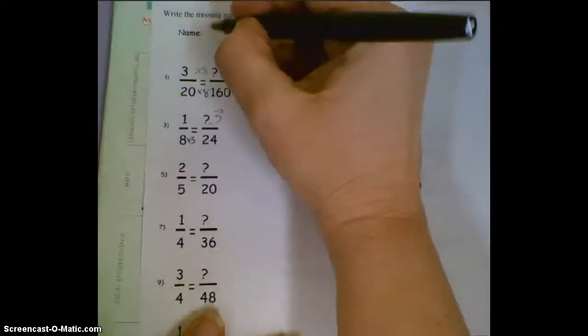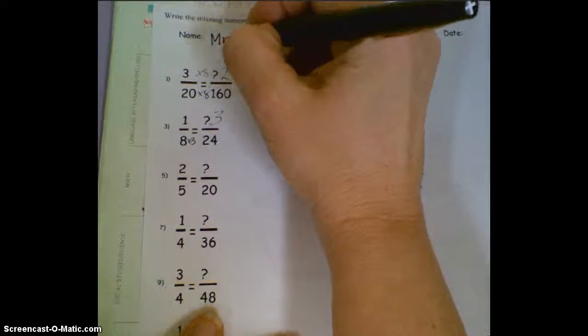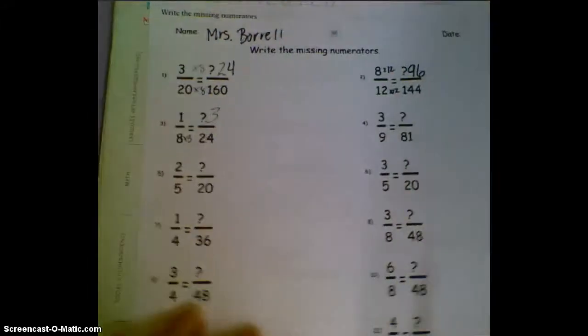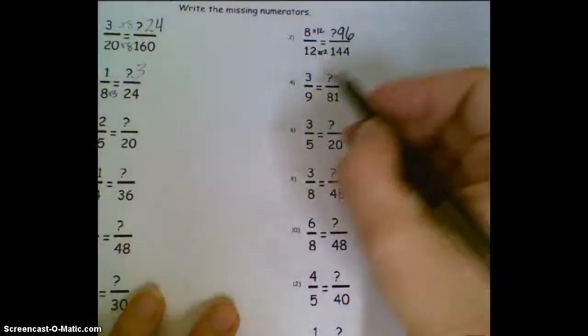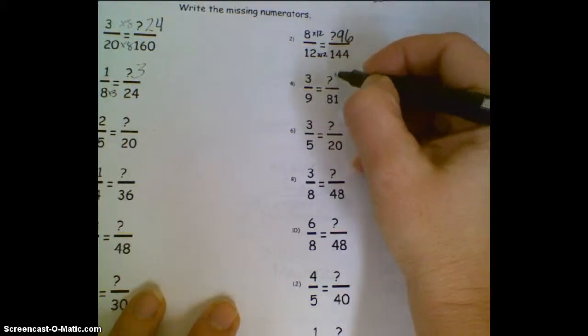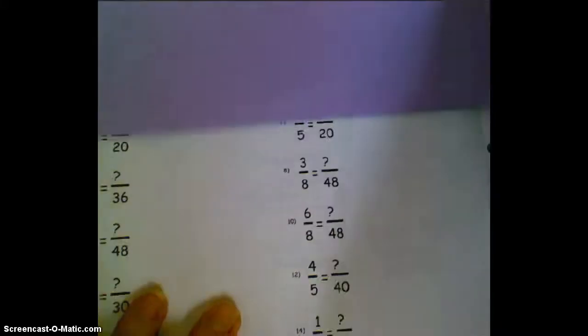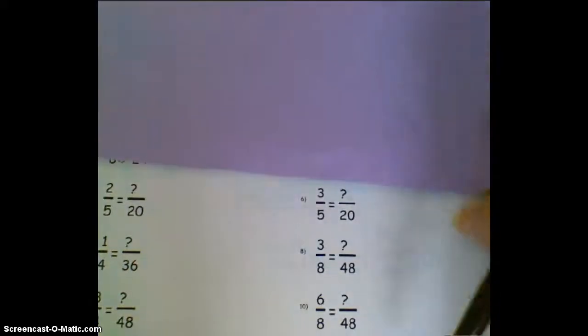Make sure you've got your name on this, too. It's in a different spot. Sometimes kids forget if it's not in the corner. 9 times 9 is 81, so 3 times 9 is 27. I'm just going to move it a little bit here so we stay focused.